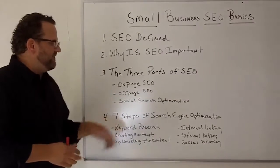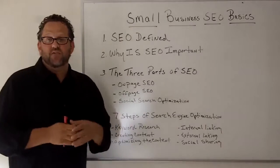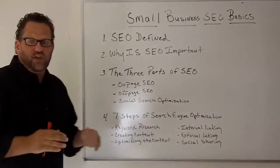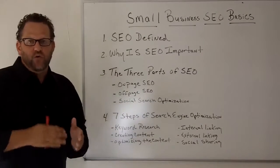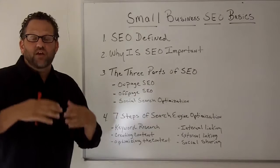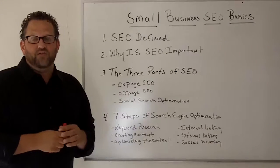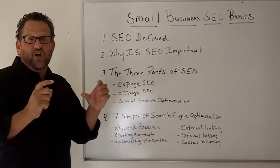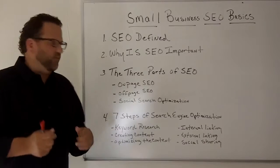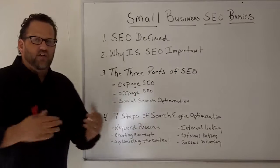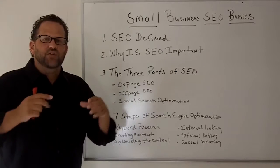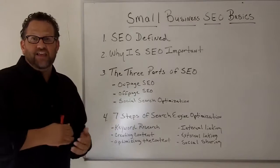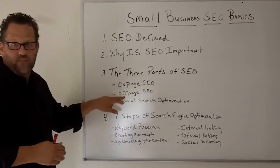Let's talk about the seven steps of search engine optimization. SEO really starts with keyword research — you have to know the phrases and keywords people are searching for to find your products and services. You can never show up in those top three listings if you don't know what people are searching for. Then it's about creating great content that other people want to share and link back to, which improves your off-page SEO.